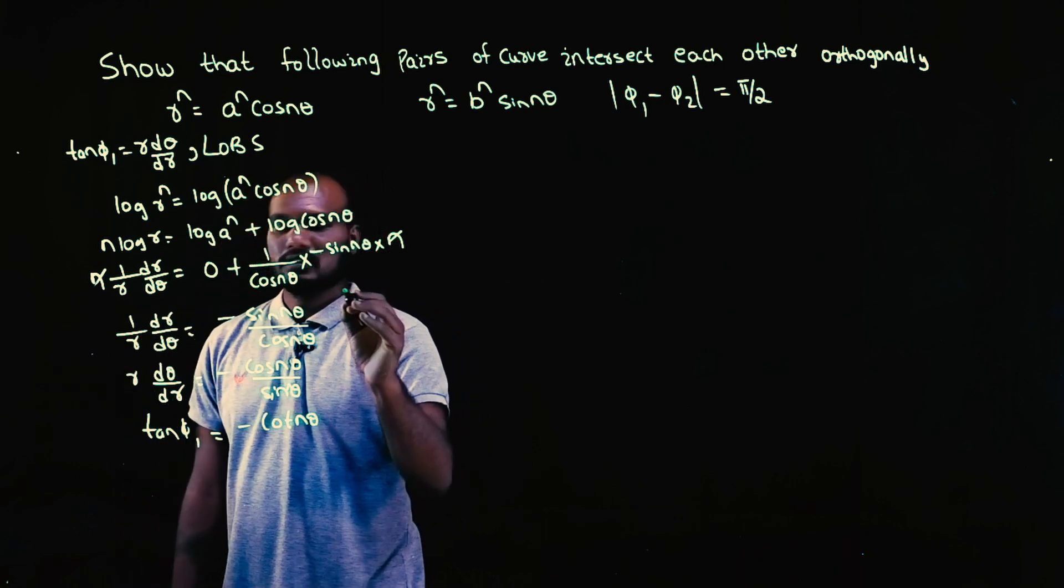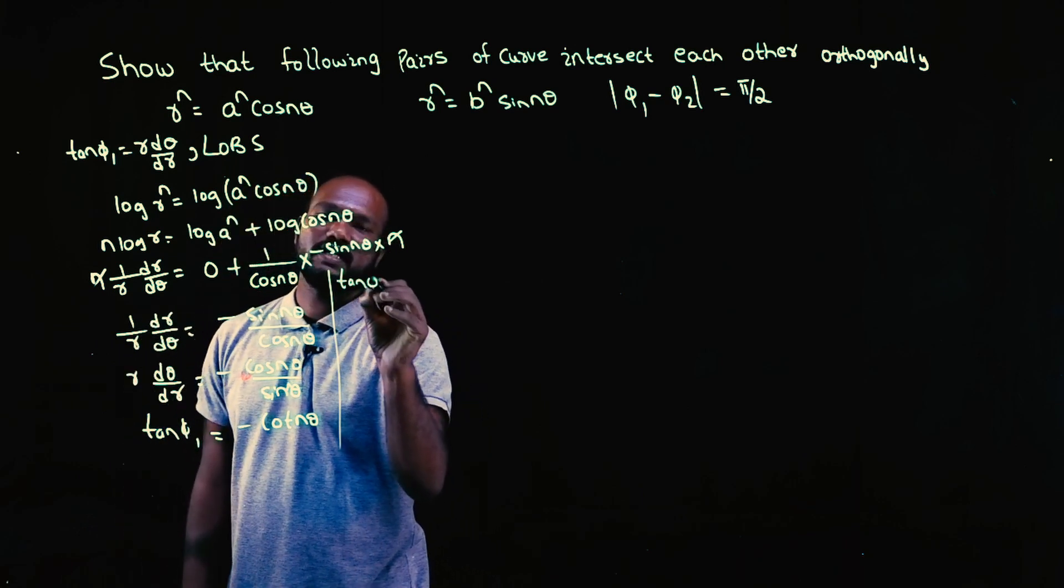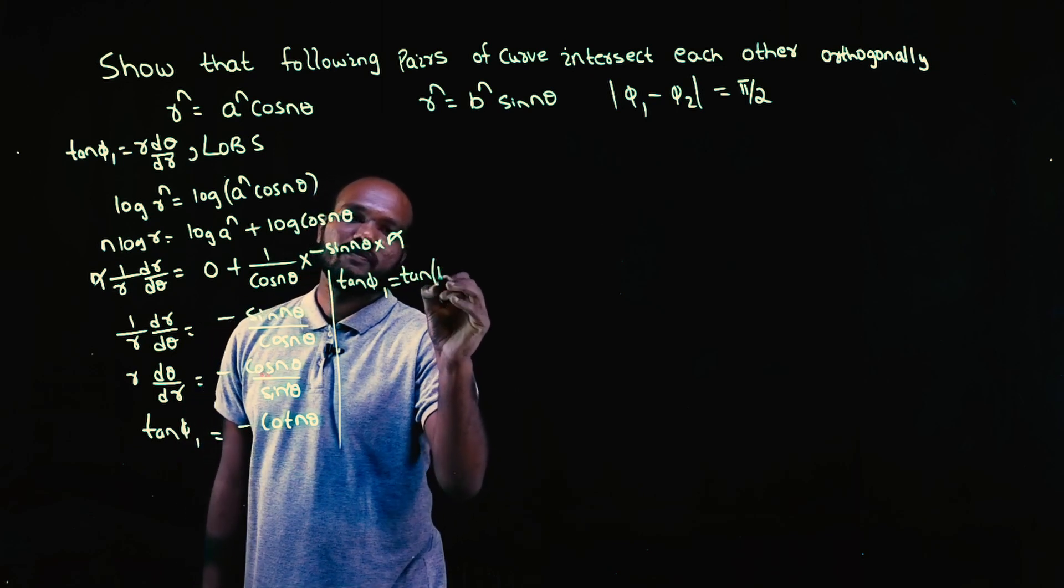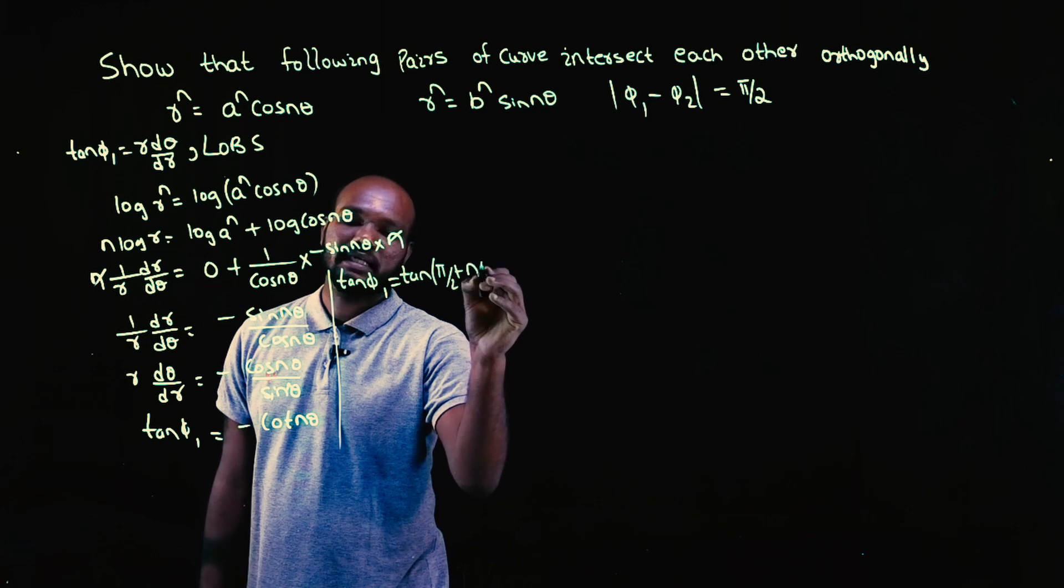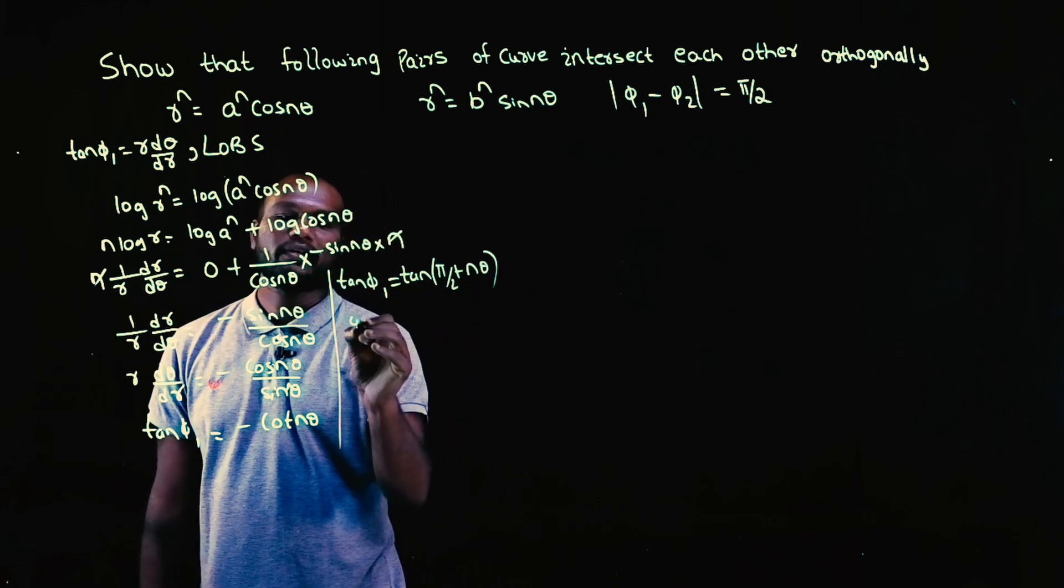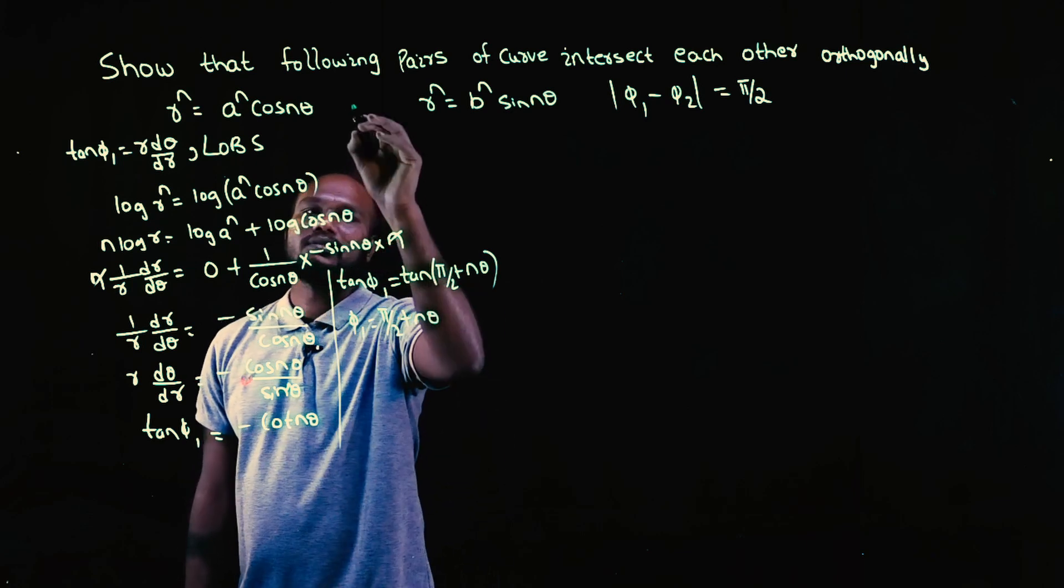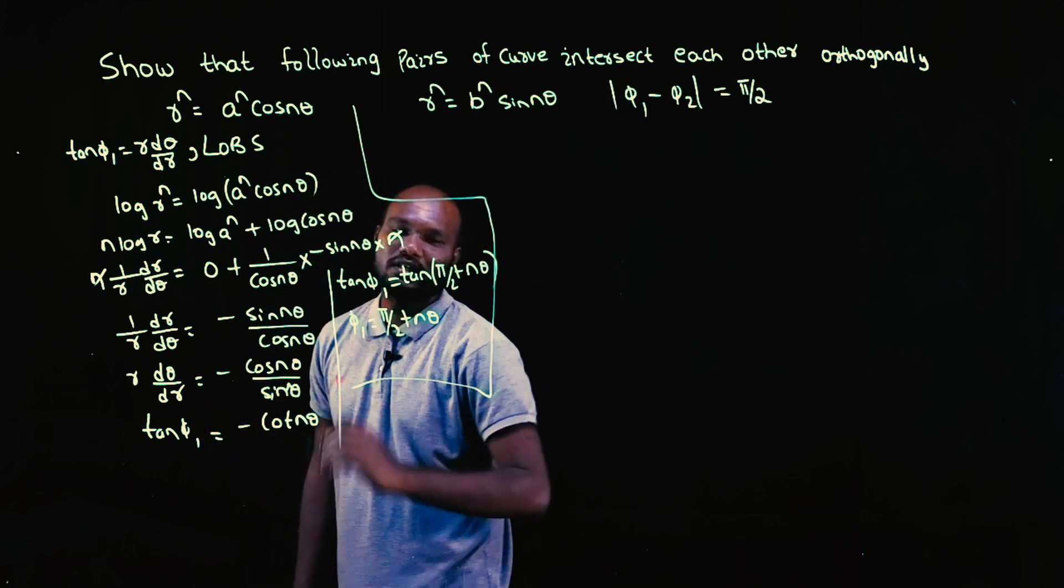Now what can I do? Tan phi 1, I can write this as tan of phi by 2 plus n theta. So phi 1 is equal to phi by 2 plus n theta. Solution for first curve is done.